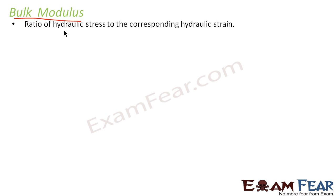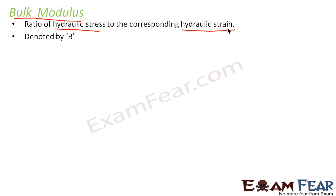Bulk modulus is the ratio of hydraulic stress to the corresponding hydraulic strain. We have got three types of modulus of elasticity for the three corresponding types of stress and strain. In the case of bulk modulus, it is generally denoted by capital B.